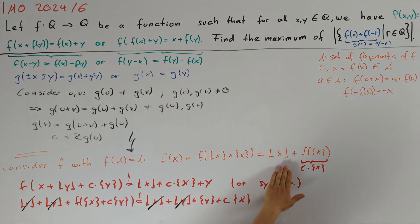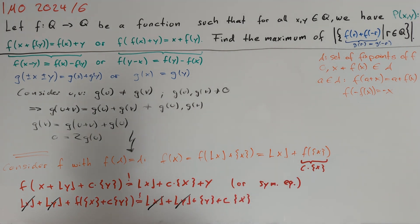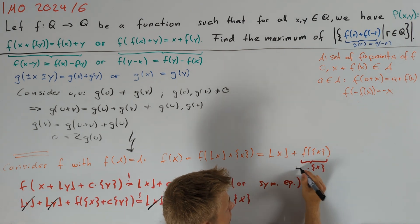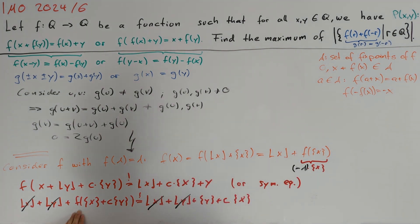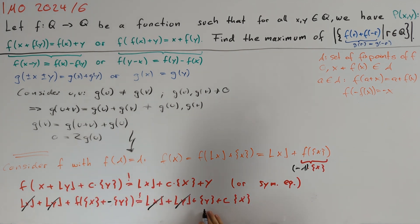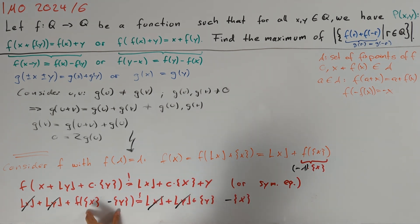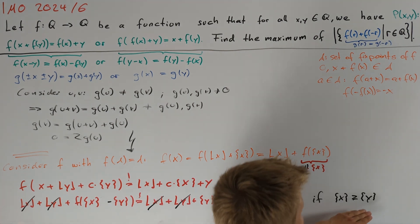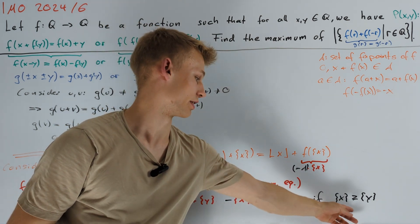If c = 1, then f is just the identity function, which is not what we want. So let's take a look at what happens if c = -1. Our equation becomes f({x} - {y}) = {y} - {x}. This is true if the argument on the left-hand side is between 0 and 1, or in other words if {x} ≥ {y}. If this inequality doesn't hold, then we have the reverse inequality, implying the second equation here is true.